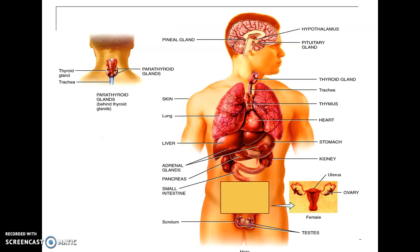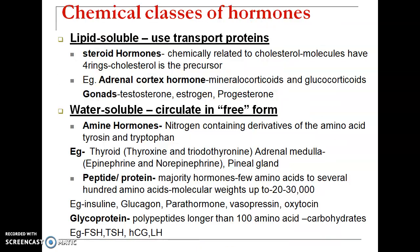Looking at the picture, we can see the endocrine organs: starting from the top — hypothalamus, pituitary, pineal gland, thyroid, thymus, heart, stomach, kidney, uterus, ovary in females and testes in males, adrenal glands, pancreas, small intestine, skin, and on the backside the parathyroid and thyroid glands — all these are included under the endocrine system.